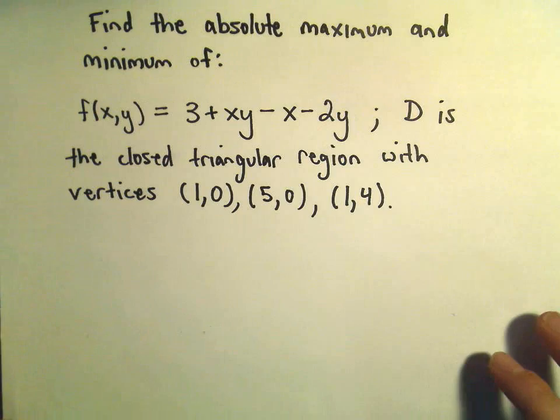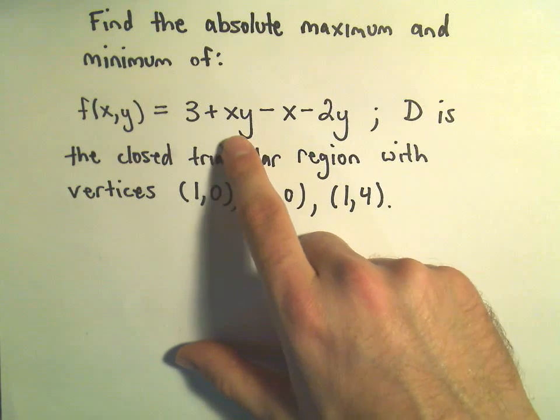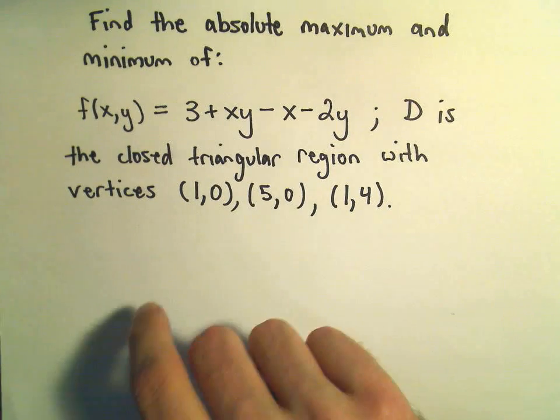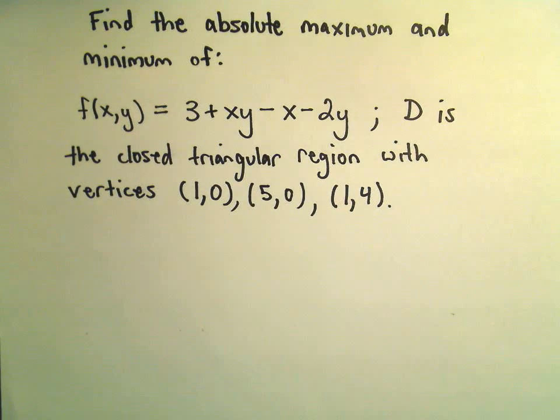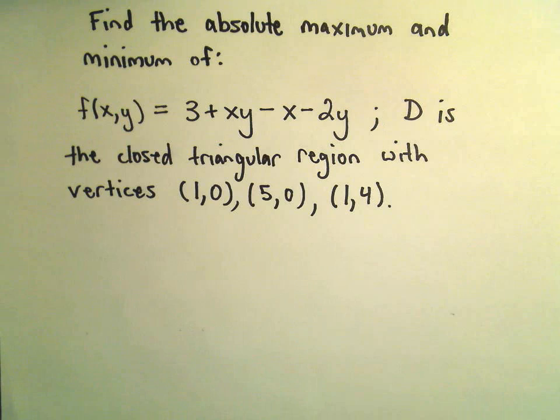Let's go through one. We're gonna find the absolute max and min of this function 3 plus xy minus x minus 2y. D is going to be this closed triangular region with vertices at (1,0), (5,0), and (1,4).